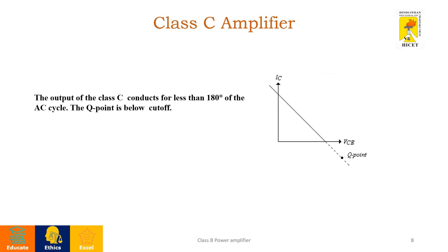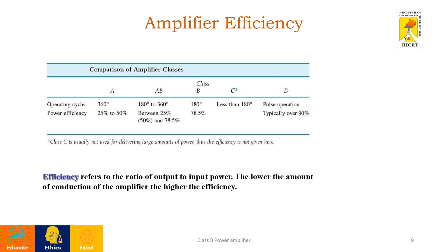Next, Class C amplifier. The Class C amplifier conducts for less than 180 degrees of the AC signal, so the Q-point will be located below the cutoff region. This table provides the efficiency of various amplifiers.